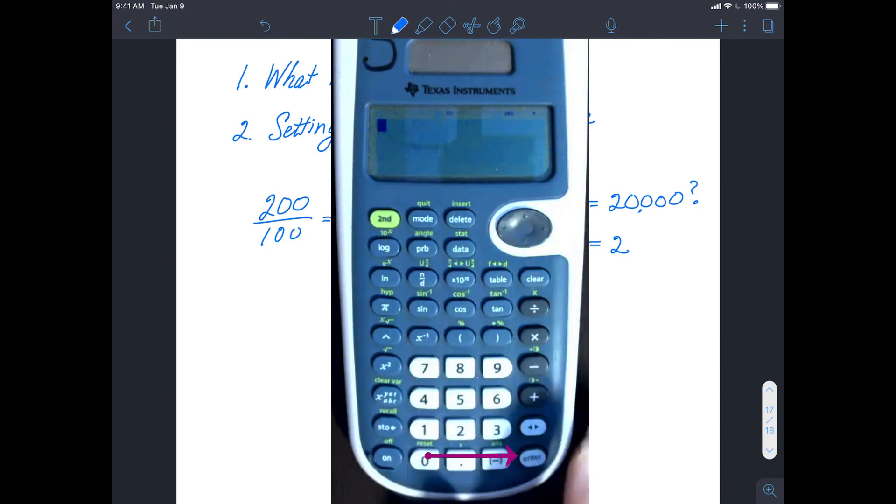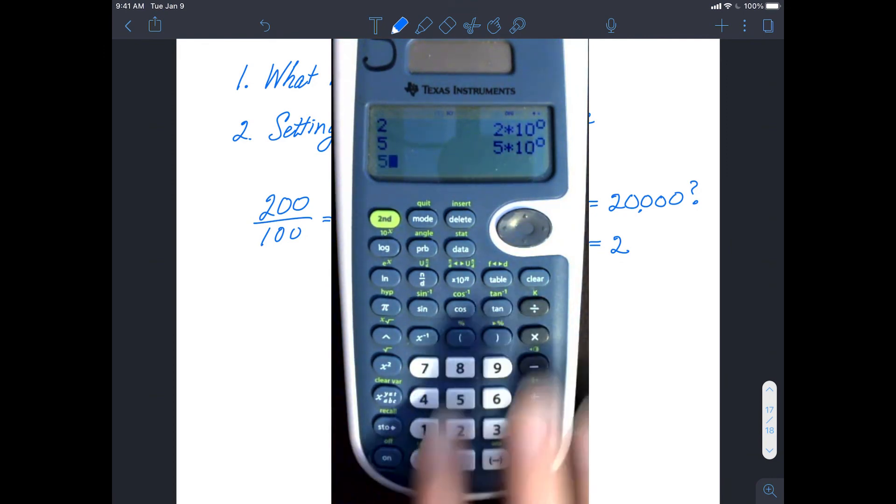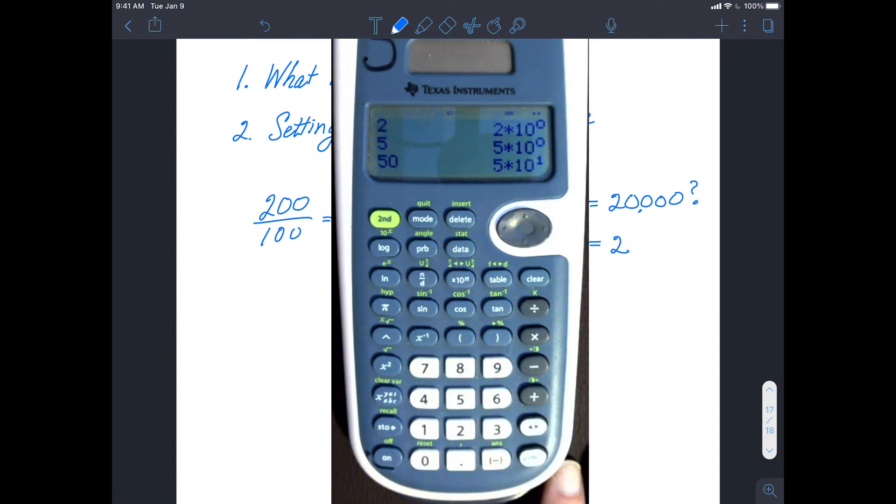And now all numbers, even small numbers like 2, 5, 50, 0.3, all of those will be automatically displayed in scientific notation.